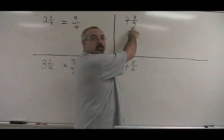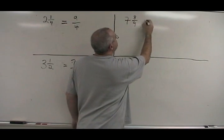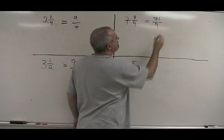7 times 9 is 63, plus 8 is 71. The denominator stays the same.